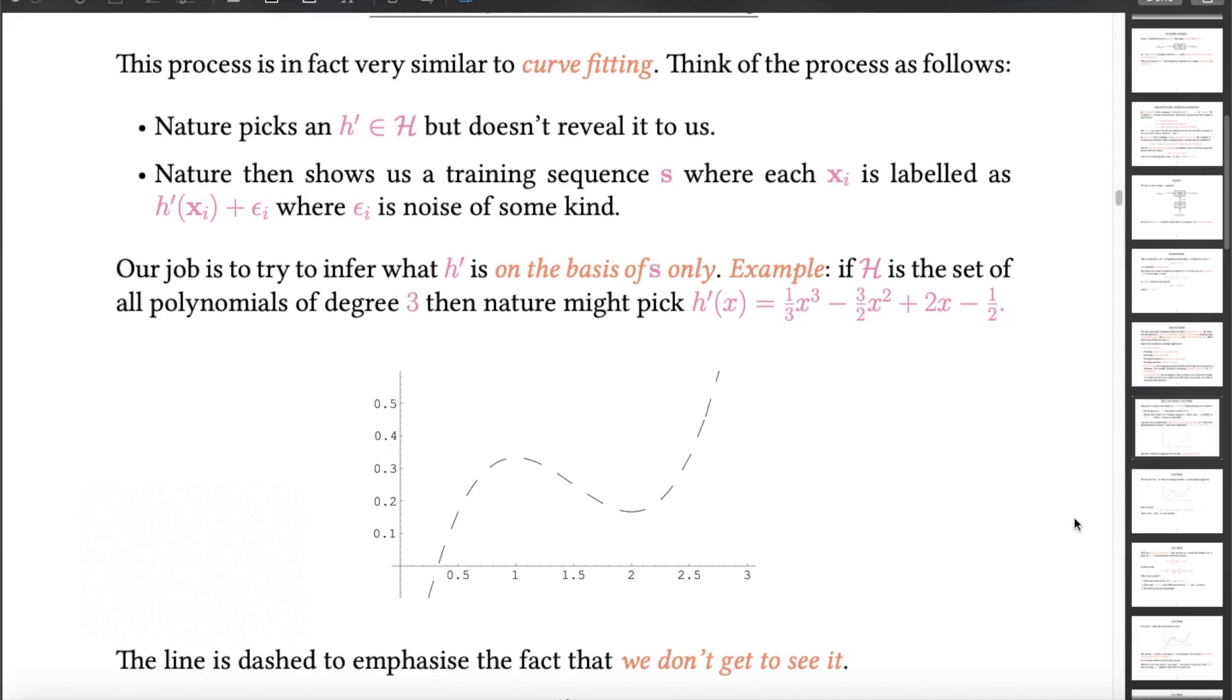So here I'm actually giving an example where there is only one feature, and that feature is real valued. And that's simply because it makes it really easy to draw. But in any case, nature only shows you a training sequence. And it makes that training sequence by picking some points, some individual features, and then finding the value of the function that nature has chosen but which it is not revealing to you. And to that value it adds some noise, epsilon.